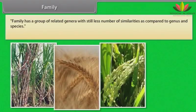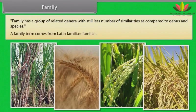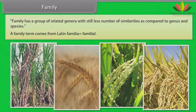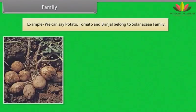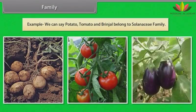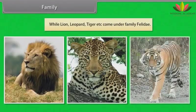Family: A family has a group of related genera with still fewer similarities as compared to genus and species. The term family comes from Latin familia, which means familial. For example, potato, tomato and brinjal belong to the Solanaceae family, while lion, leopard, tiger etc. come under family Felidae.